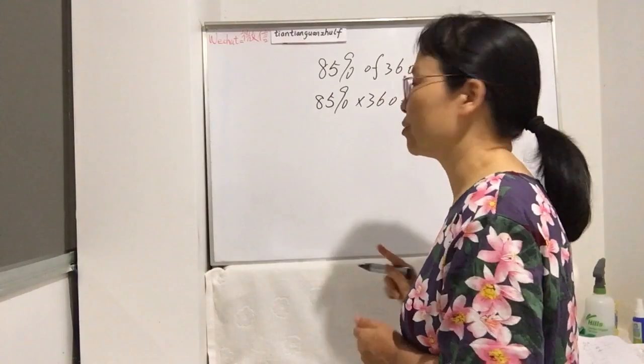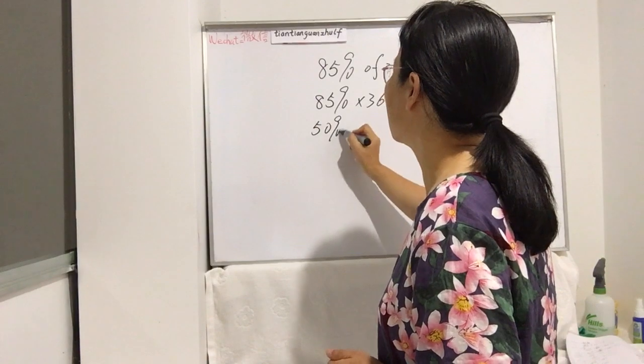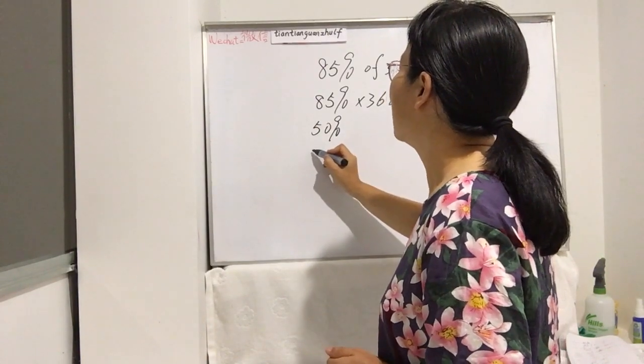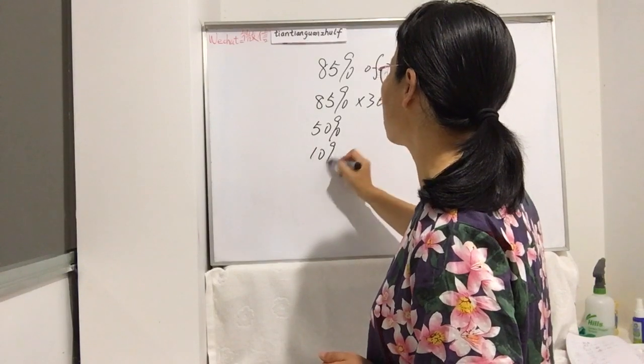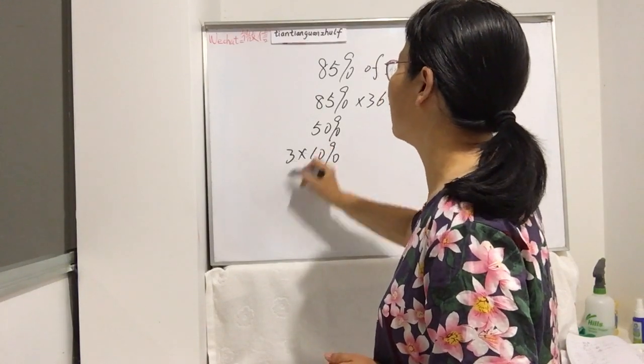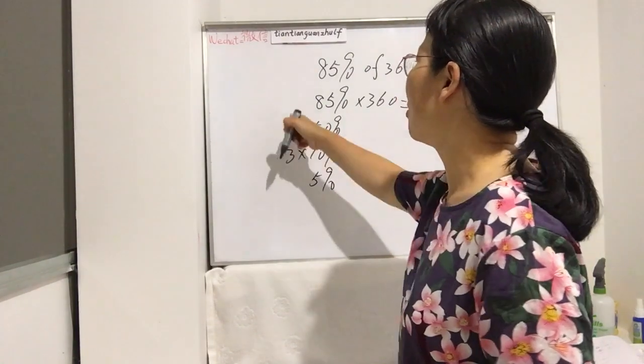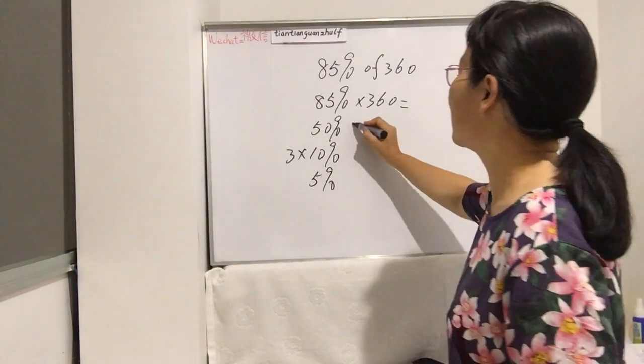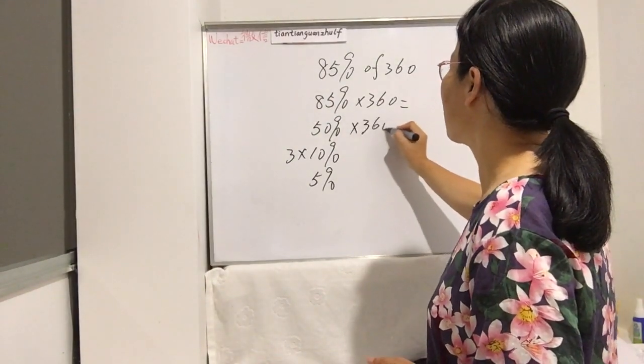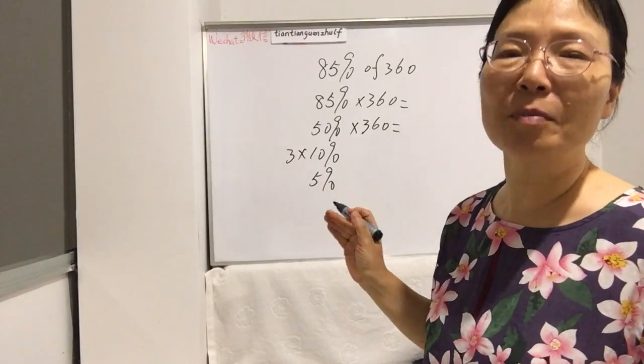Now we choose one way. Let's work as 50% plus 35%, which is three times 10% plus 5%. This all together is 85%.